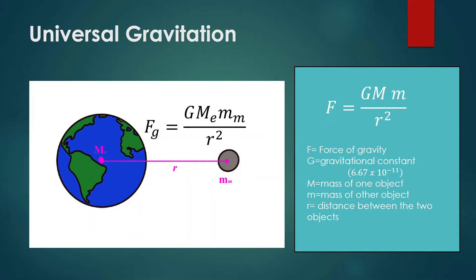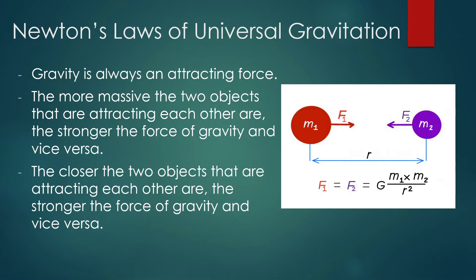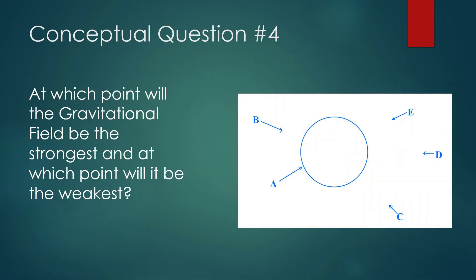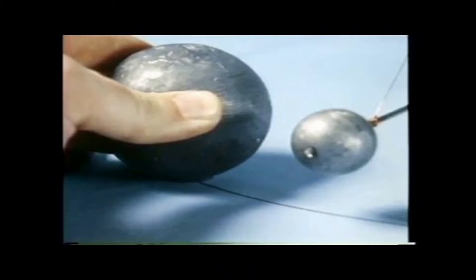We're going to go straight into it. First question: at which point will the gravitational field be the strongest, and at which point will it be the weakest? We should know right away — the closer the object is to the massive object, the stronger the gravitational field is. So A is the strongest, and the further away the object is, the weaker it is. So A is the strongest and D is the weakest.